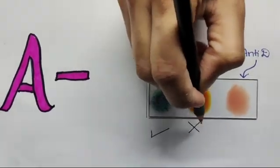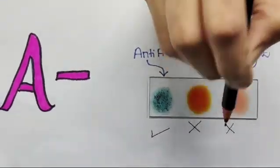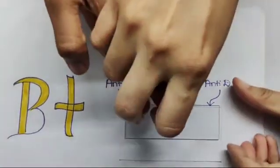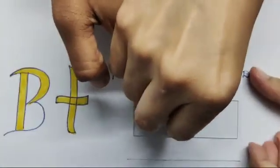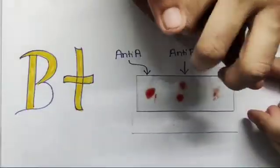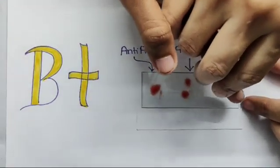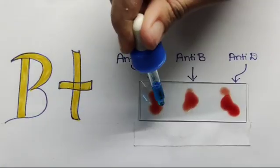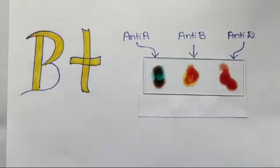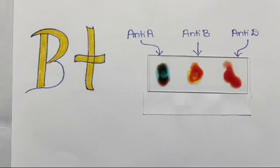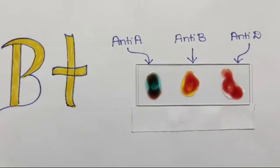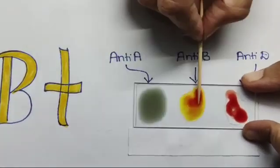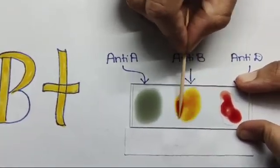For determining B positive blood group, repeat the same procedure and observe. Clotting is only seen in anti-B and not in anti-A, which means antigen B is only present. It is B blood group.